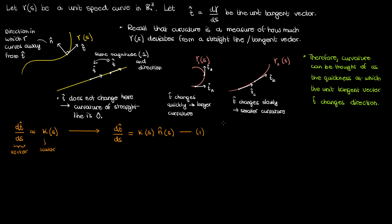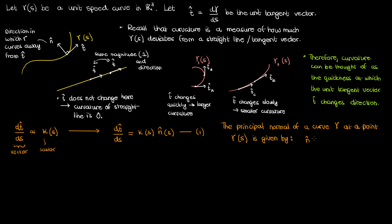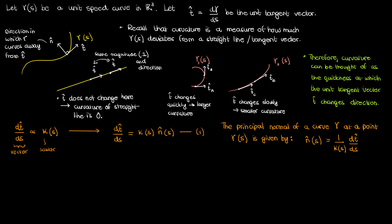This leads us to the definition of the principal normal vector. The principal normal vector of a curve gamma at a point gamma of s is given by the vector n of s, which is equal to dt by ds divided by the curvature kappa. It's just the previous equation rearranged to isolate n.